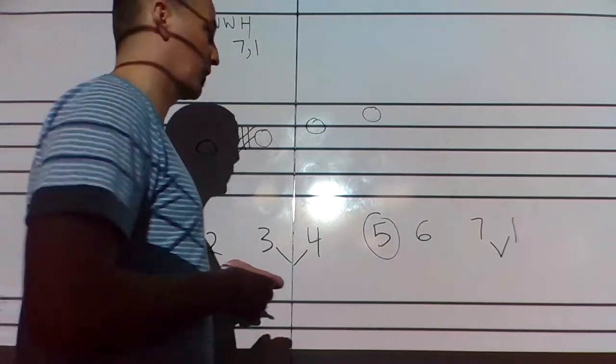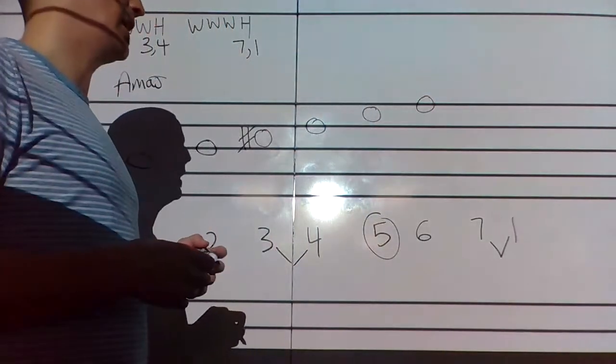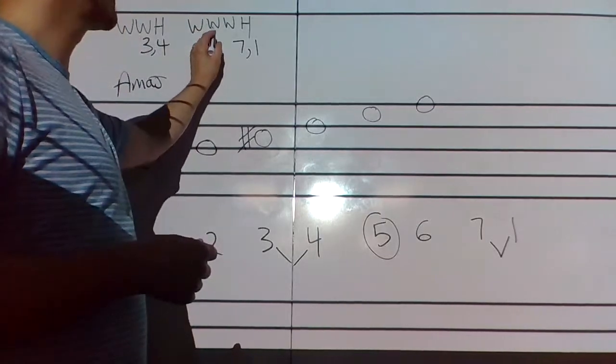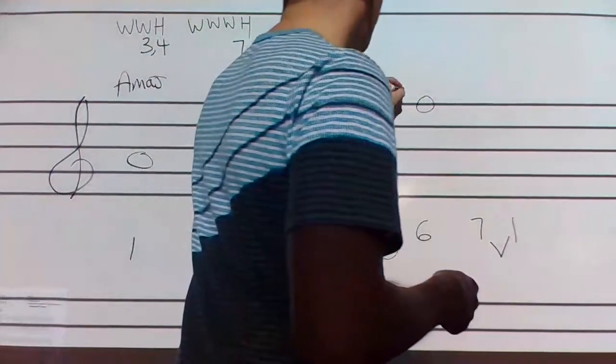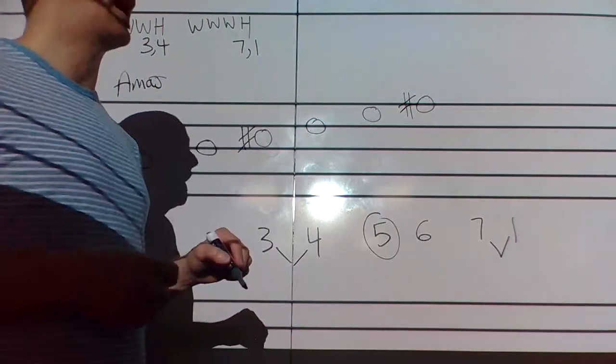Two more whole steps to go before the half step. E, that means the next note has to be some kind of F. E to F is how far? It's a half step. I need a whole step, so I need to raise that F one half step. The way we do that in music is by adding a sharp.